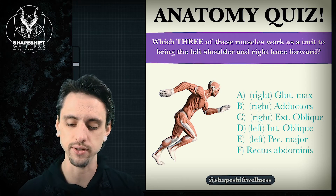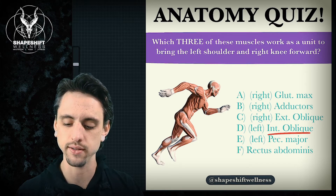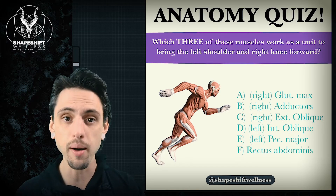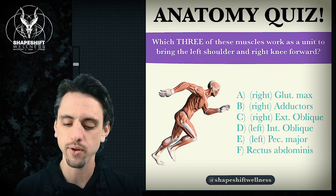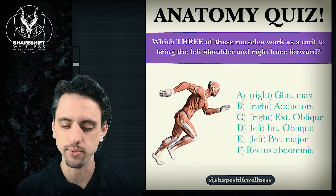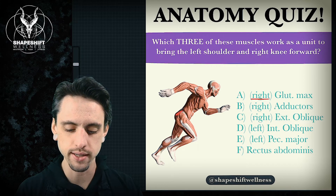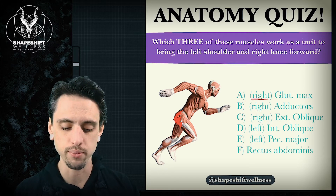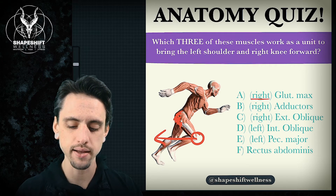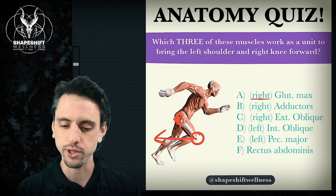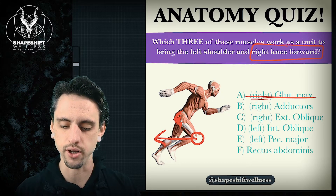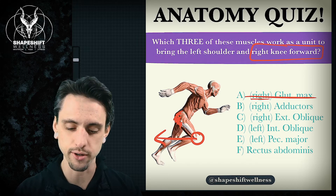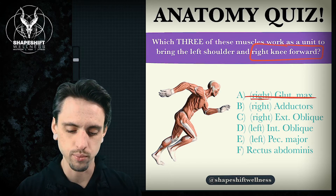You've got to know what the internal oblique and the external oblique do, because they do opposite things depending on the side they're on. Starting from glute max — the right glute max would bring the knee back. So we're trying to see which things are going to bring the right knee forward. If the right glute max brings the knee back, then no, it can't be glute max. It's a hip extender, so not the glute max.